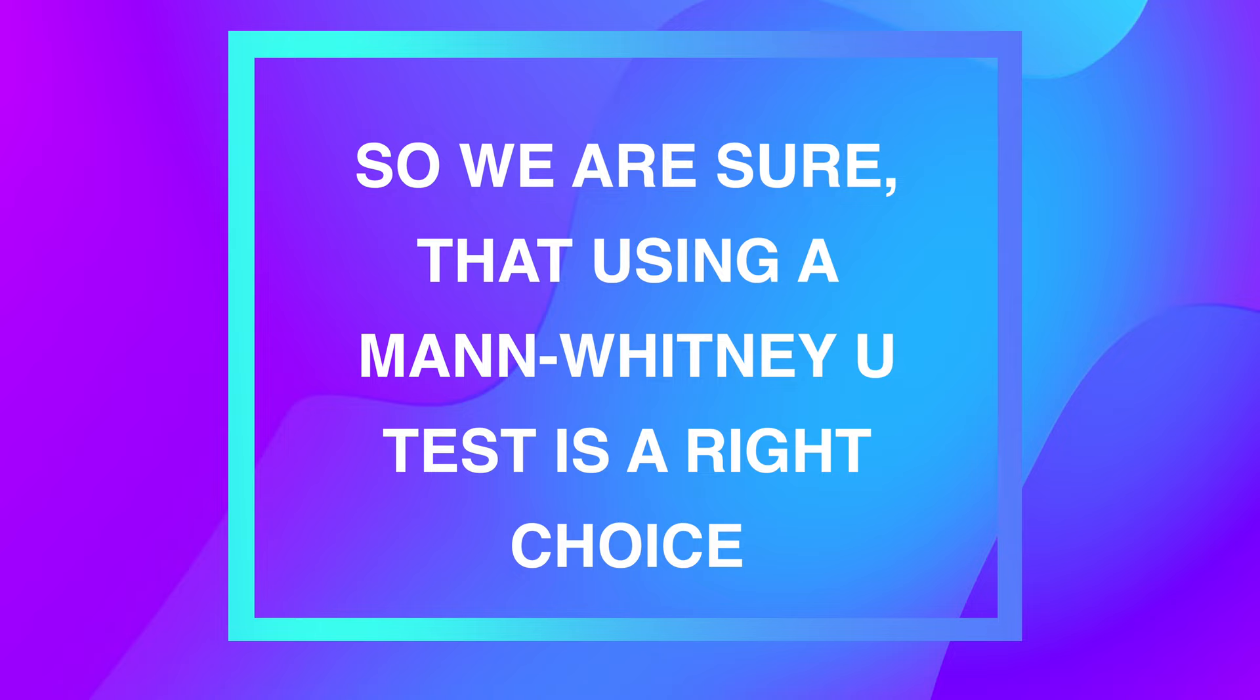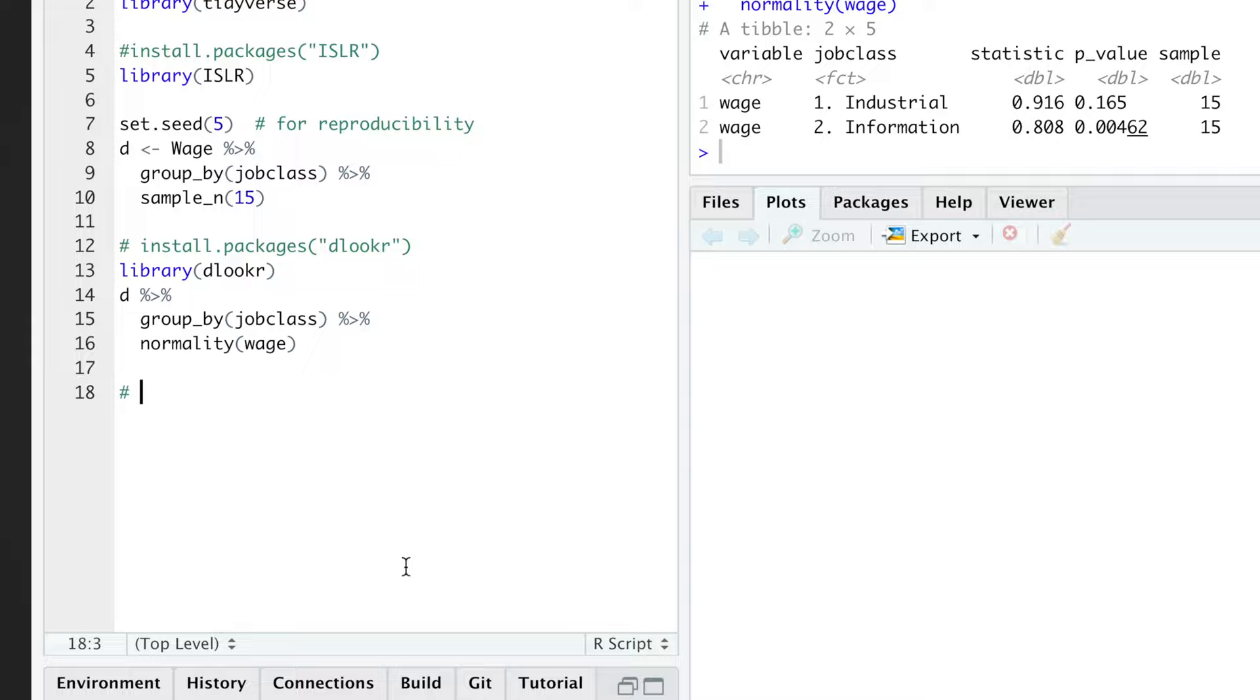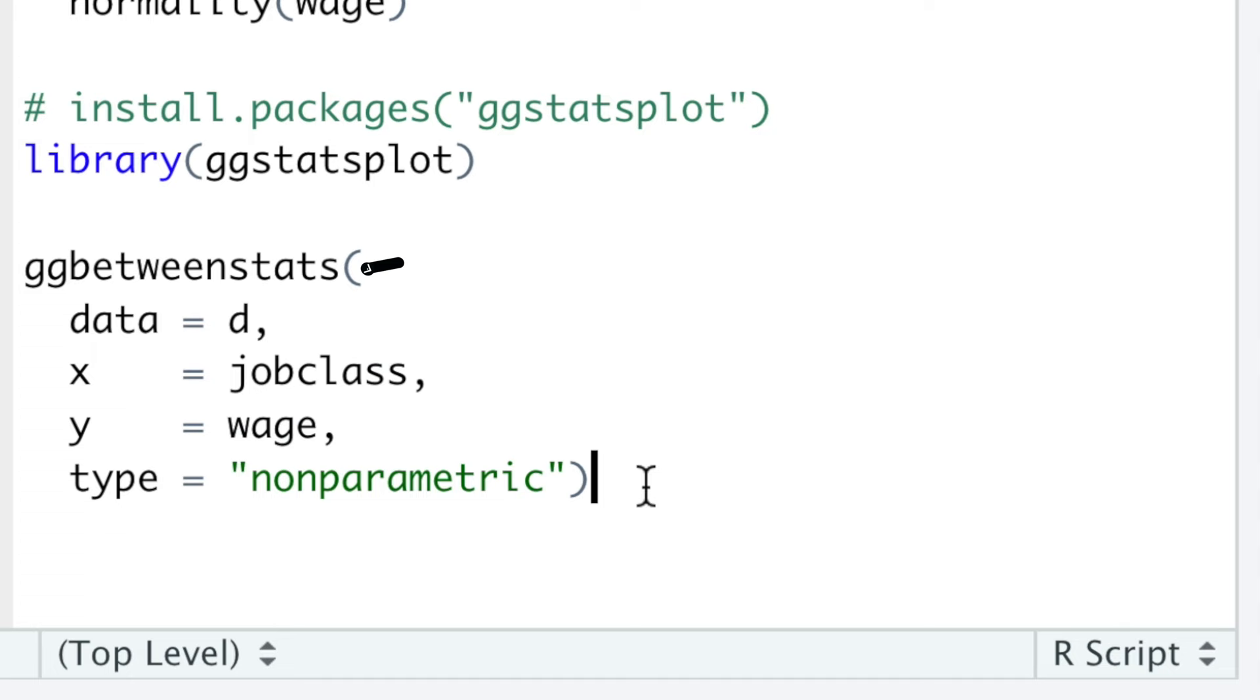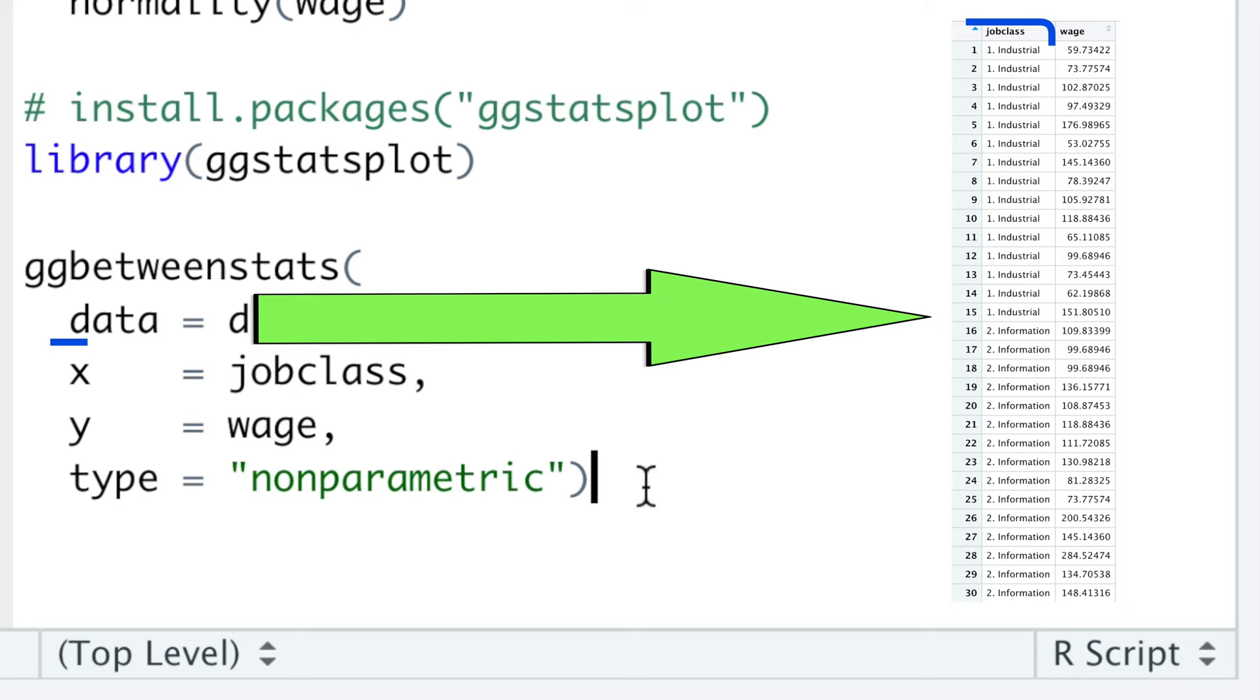And the best way to compute our test, in my opinion, is the ggBetweenStats function from ggStatsPlots package, which needs only four arguments. First, our data D, with X as the grouping variable jobclass, and Y being salaries.